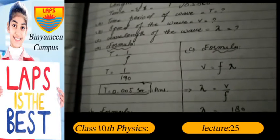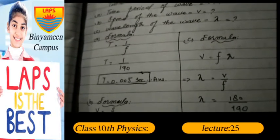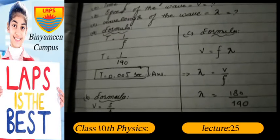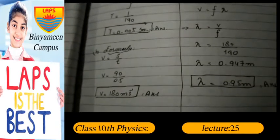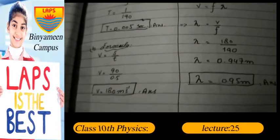Time period T = 1/f. T = 1/90. After dividing, we get 0.005 seconds. For Part B, formula: v = s/t. v